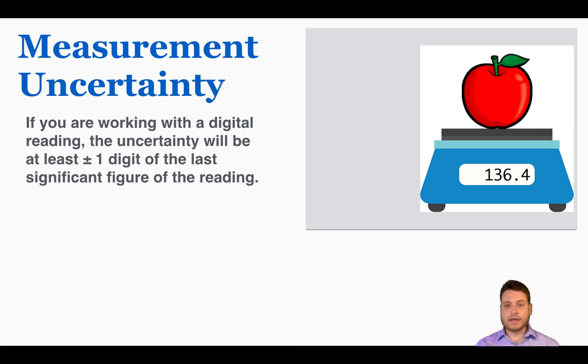So when I put this apple on it, I get a recording of a certain value, 136.4. In this case, this is grams. And so the uncertainty here would be plus or minus 0.1 because it's plus or minus one digit of the last significant figure. And here that last significant figure is the four after the decimal point. So I would say its mass is 136.4 plus or minus 0.1 grams.